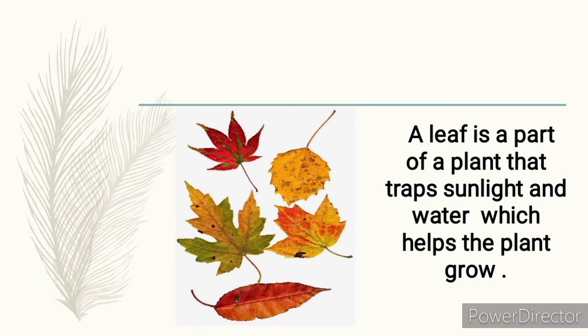But what's a leaf? A leaf is a part of a plant that traps sunlight and water, which helps the plant grow. So a leaf traps sunlight and water to help a plant grow.